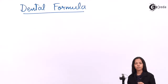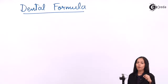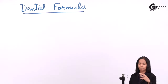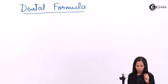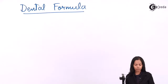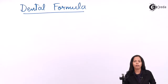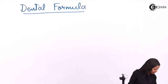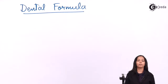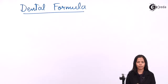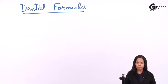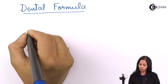We are going to understand first the arrangement of milk teeth. Milk teeth total 20 teeth. Now let's see the arrangement — how do we calculate it? We calculate from the right-hand side and left-hand side. The formula is written with one bar: the numbers written above the bar represent the set of teeth present on the upper jaw, that is the maxilla.